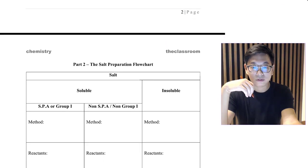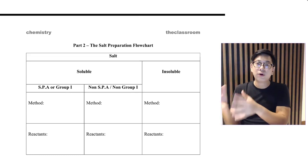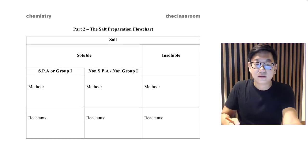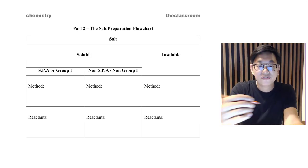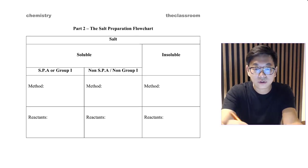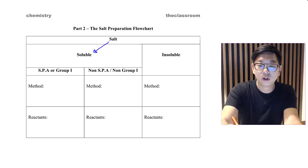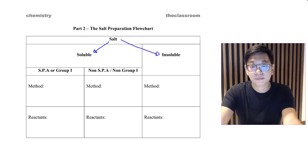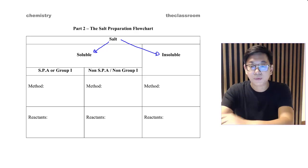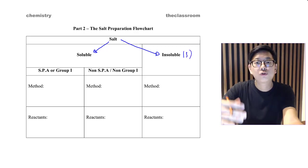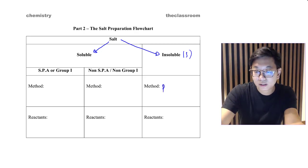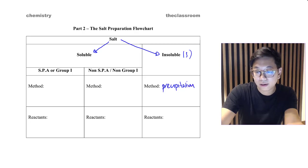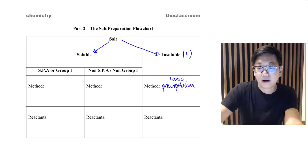That's step 1 — the solubility table. Now, once you memorize that, you move on to the flow chart. When you come across a salt, ask yourself the important question: is it soluble or insoluble? If the salt is insoluble — one of the 3 insoluble sulfates, 2 insoluble chlorides, or most carbonates — we will use the method known as ionic precipitation.